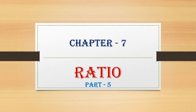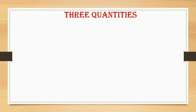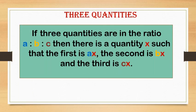Hi students, welcome back to chapter 7 ratio. Today we are going to discuss the heading '3 quantities'. In algebra, we can say if 3 quantities are in the ratio A is to B is to C, then there is a quantity X such that the first is AX, the second is BX and the third is CX.